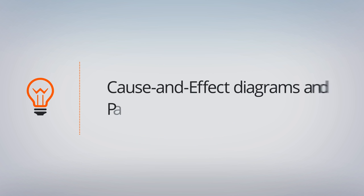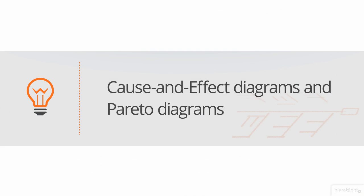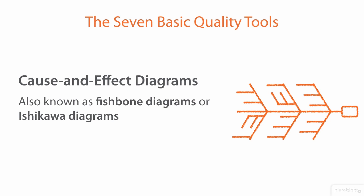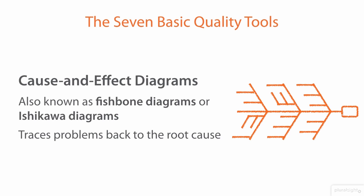The first two basic quality tools we're going to look at are Cause and Effect Diagrams and Pareto Diagrams. Cause and Effect Diagrams are also known as Fishbone Diagrams or Ishikawa Diagrams, depending on the terminology your particular organization might use. These are useful in helping to trace problems back to their root causes by asking why a series of times.